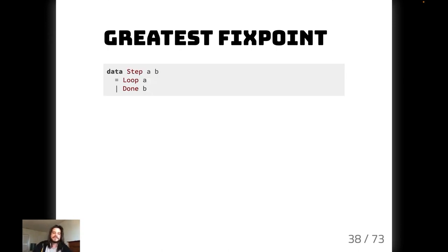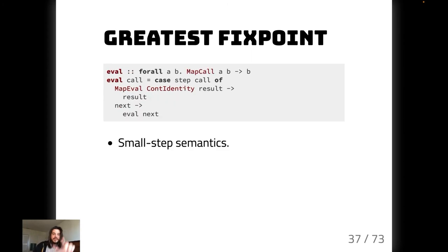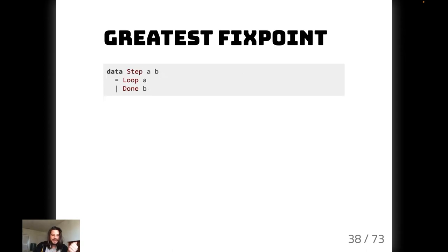We had to match on `MapEvalContIdentity` specifically. I want to look at what this `Step` data type is — `done` and `loop`. Step is `Step A B`, with `Loop A` or `Done B`. This is essentially just `Either` with more specific names to make it clear what's happening. Originally `tailRec` used just `Either`, but it was very easy to get them mixed up — which one is left or right? So it was changed to use explicit names, which makes it a lot easier to use.